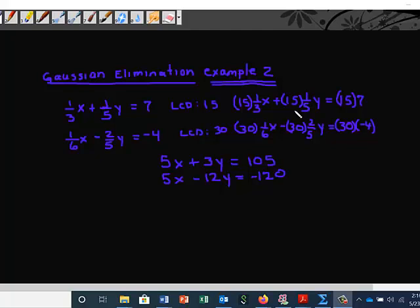We multiply fifteen to each of the terms. When we multiply fifteen to each of the terms, we get 5x + 3y = 105. For this equation, the LCD is going to be thirty. So we multiply thirty to each of the terms here, and we come up with 5x - 12y = -120.